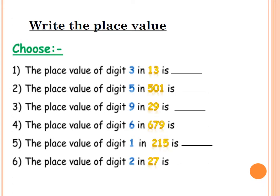Let's answer a question on the place value. We want to write the place value of the given digit. The first one: the place value of digit 3 in 13. Look at digit 3 in 13 — 3 is ones or tens? Here it is ones. The place value of digit 5 in 501: make a line under the 5. 5 is in which place — ones, tens, or hundreds? Hundreds. We can write hundreds or we can write H. The place value of digit 9 in 29: underline 9. 9 is in the ones. We can write ones or we can write O.